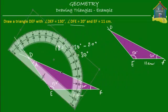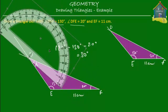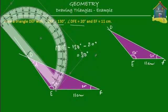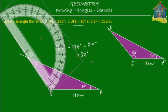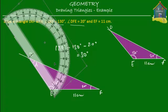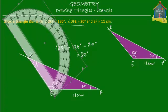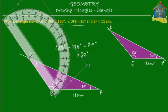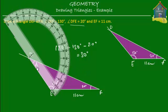So I put my protractor here at point D and let's see. Well, this angle really is equal to 30 degrees, 0, 10, 20, and 30. So this is equal to 30 degrees, and we have drawn our triangle correctly.